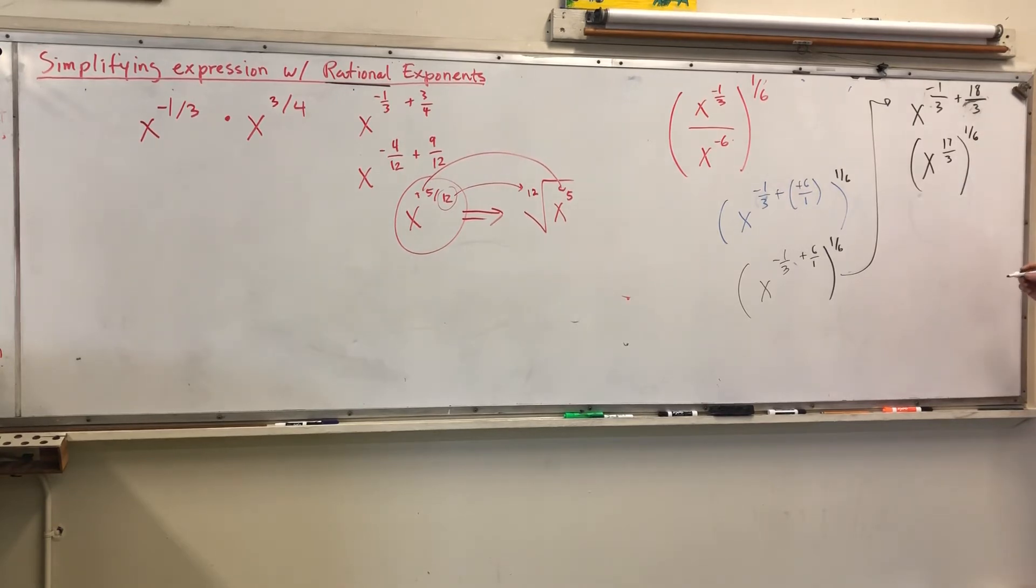We know this is multiplication here. You're multiplying your exponents. So this is going to be raised to another power, x, 17 over three, times one over six, x, 17 over 18.